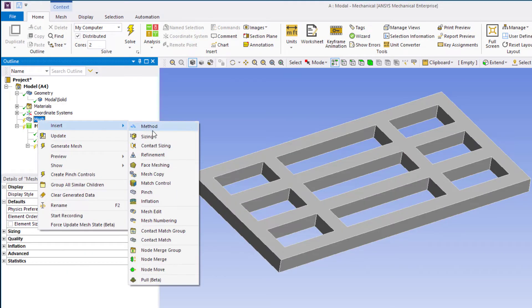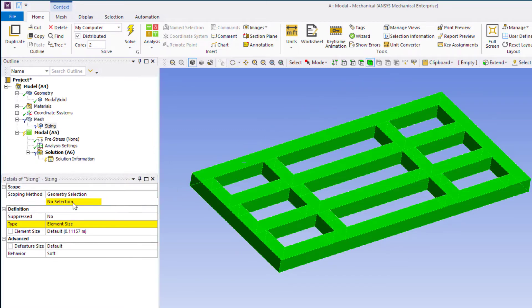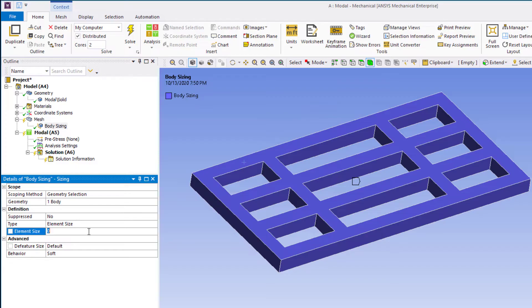Insert mesh sizing under mesh and set the sizing to 0.05 meters. Geometry is suitable for sweep mesh and we want to ensure that there are at least two elements through the thickness of the frame for better accuracy.